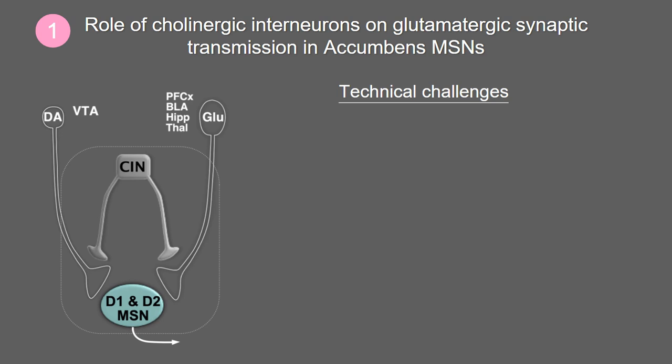Going back to our cartoon — we have our main players: the medium spiny neurons, the cholinergic interneurons (CIN), and the dopaminergic and glutamatergic inputs. Before we can answer these questions, we have a couple of technical challenges to overcome. First, we need to be able to control very specifically the excitability of cholinergic interneurons. The problem is that cholinergic interneurons represent less than 1% of the total neuronal population of the nucleus accumbens — it's literally looking for a needle in a haystack.